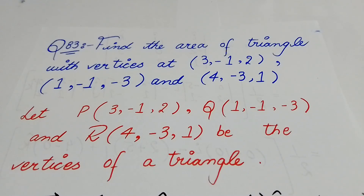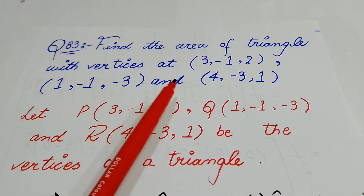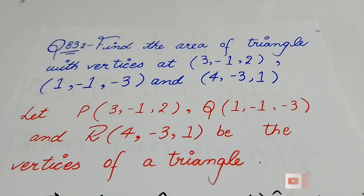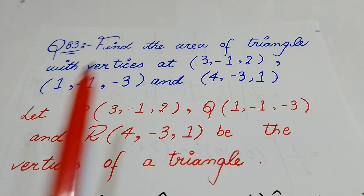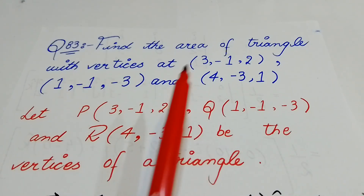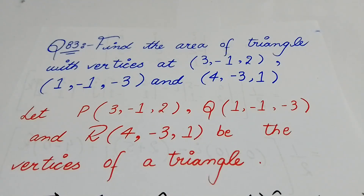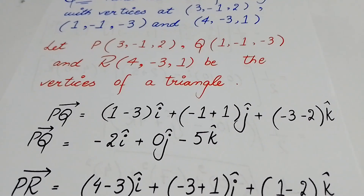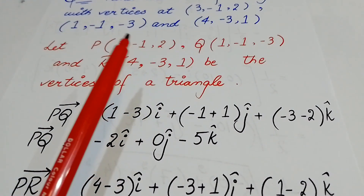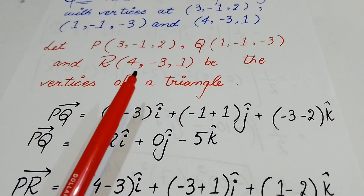First of all, I need to give these vertices a name. Some questions will already have names given. If we have a, b, c, then we don't need to assign them. But according to this question, we let P = (3, -1, 2), Q = (1, -1, -3), and R = (4, -3, 1).